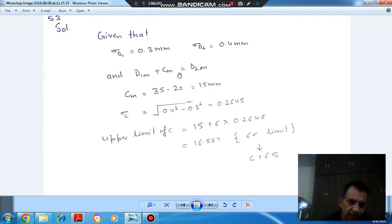D1 plus C mean dimensions are - D2 is your 35 mm and this D1 is 20, so mean C is 15. And standard deviation sigma C is 0.264. Okay.